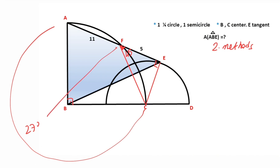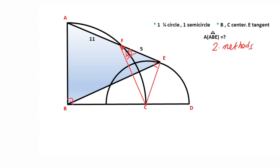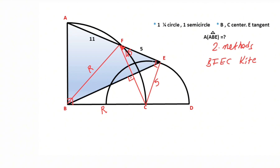Angle AFC must equal 135 degrees, which means 45 degrees are left here. If you focus on this triangle, we get a right triangle, so this side must equal 5 units. If we connect these two points, these are also radii, therefore BFEC is a kite. Here is 90 degrees.